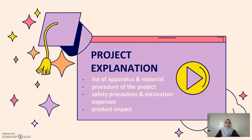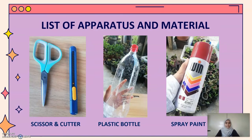It's time for me to explain about my project. These are the list of apparatus and materials that I use for my project, which are scissors, cutter, plastic bottle, and spray paint. Now, let's watch the video of me doing the project.